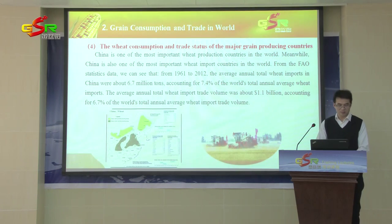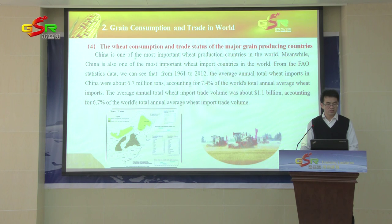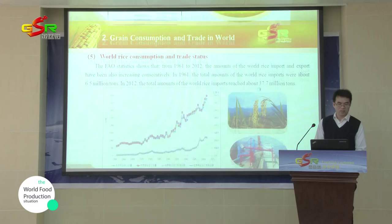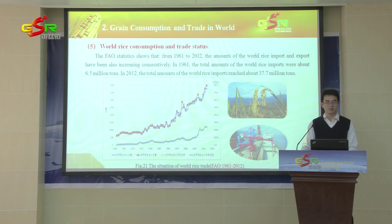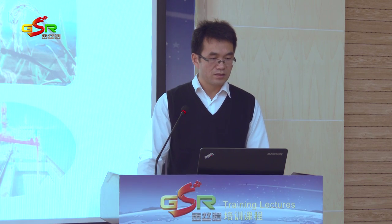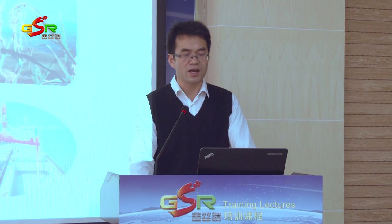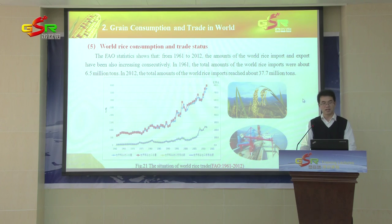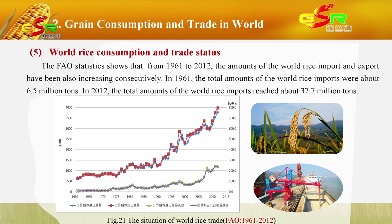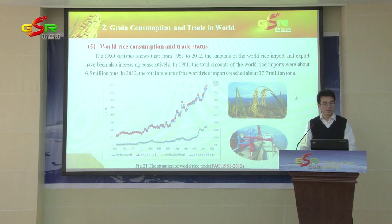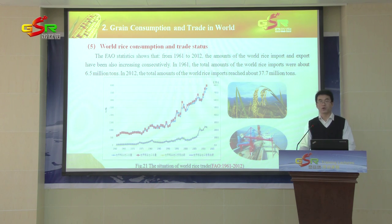This picture gives us information about the wheat consumption and trade data of the major grain-producing countries, as well as the world rice consumption and trade data. FAO statistics show that from 1961 to 2012, the amount of the world's rice imports and exports have also been increasing. In 1961, the total amount of the world's rice imports was about 6.5 million tons, and by 2012 it had reached about 37.7 million tons.